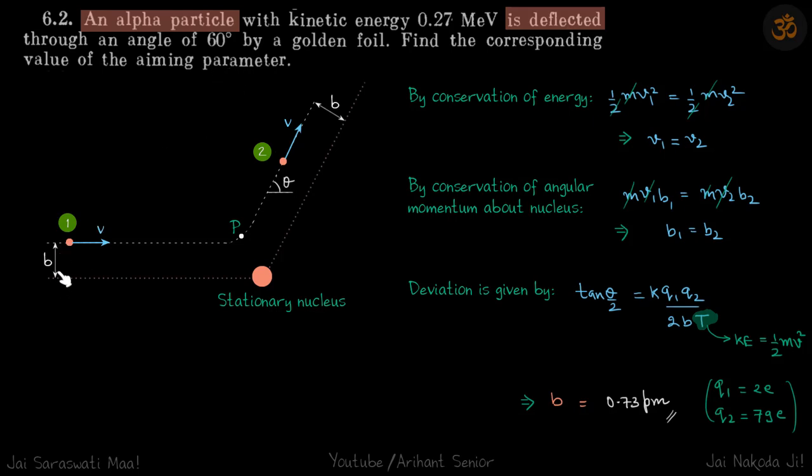The aiming parameter is this distance. This is the alpha particle approaching with velocity v from the stationary nucleus of the gold foil. It's going to deflect because it will be repelled, and we need to find b if this angle θ is given.